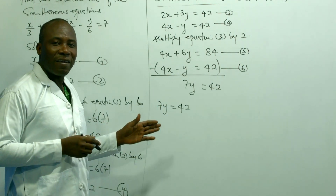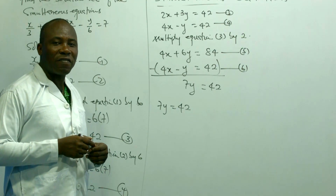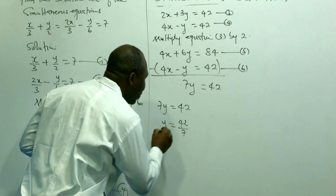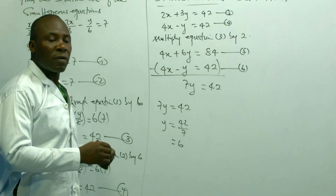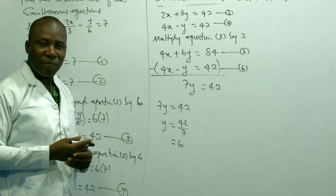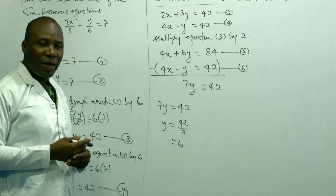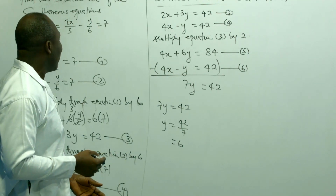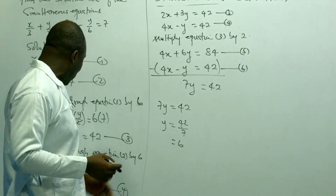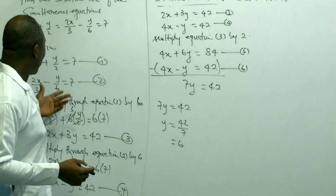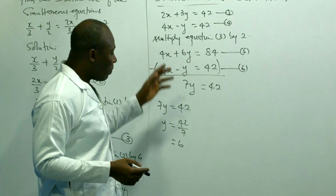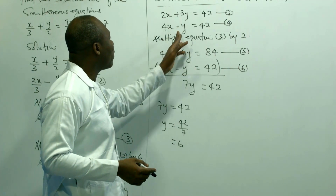So we have 7y = 42. To find y, take the multiplicative inverse of 7: y = 42/7 = 6. Having found y, we can easily find x by substituting into either equation 3 or equation 4 — since equations 1 and 2 contain fractions, it's easier to use equations 3 or 4.